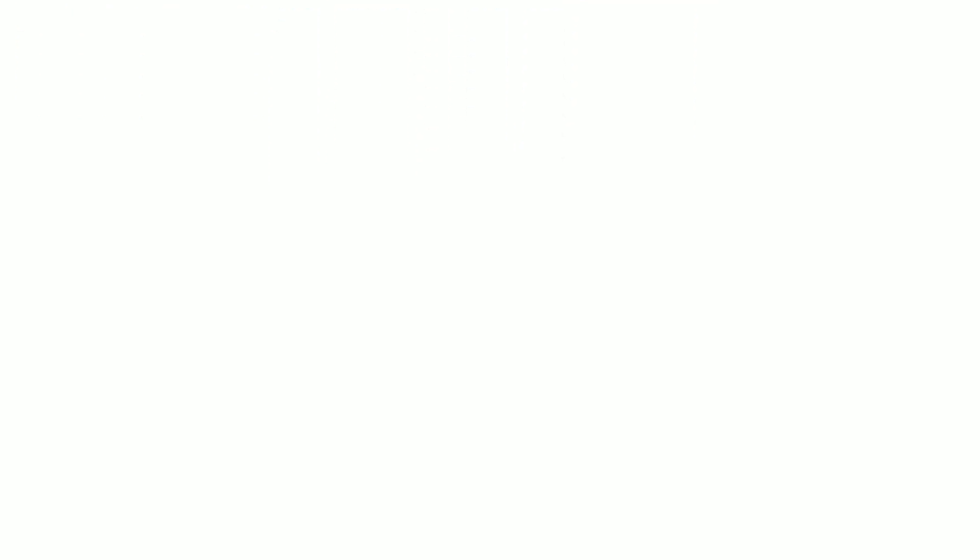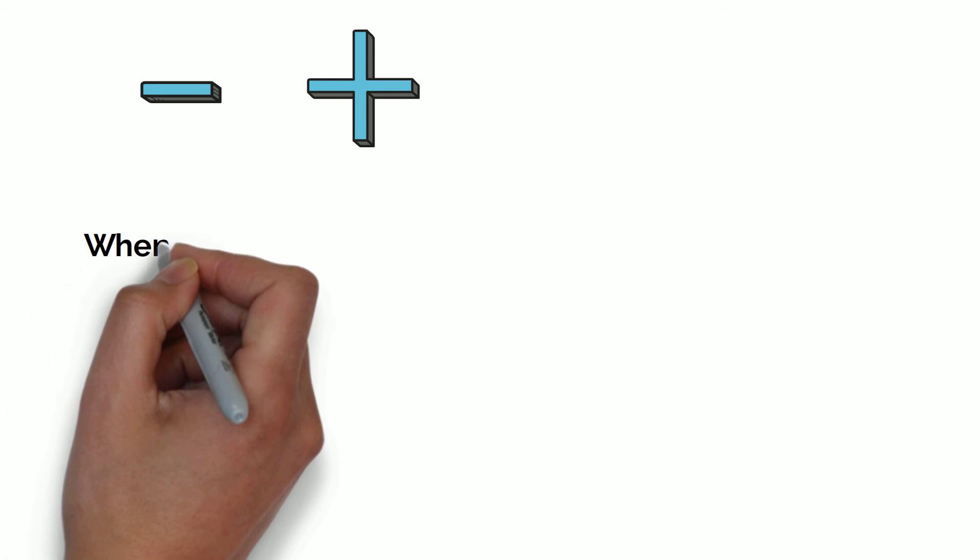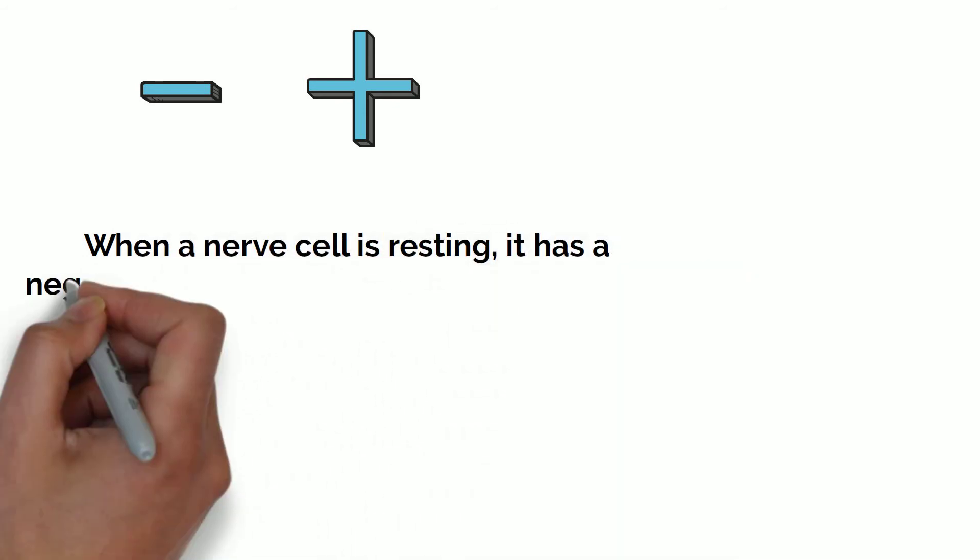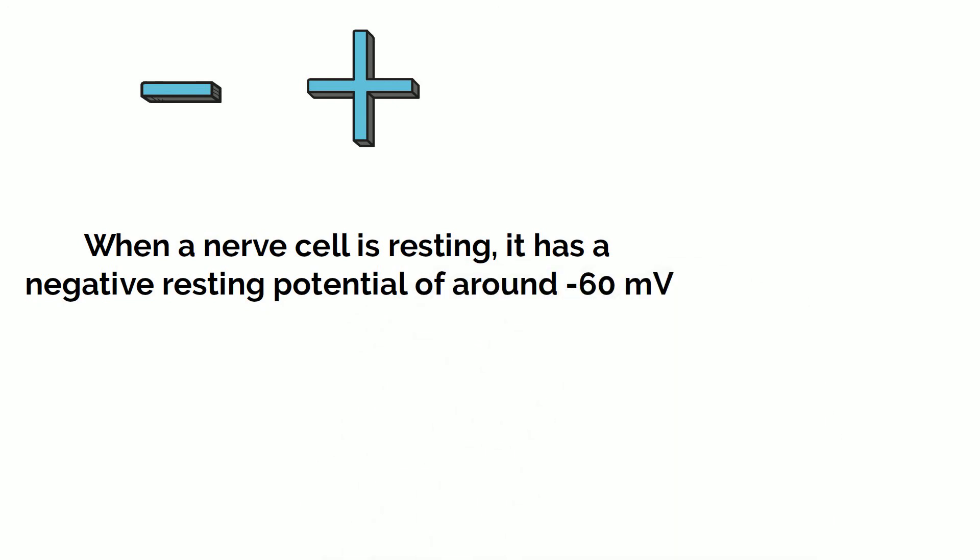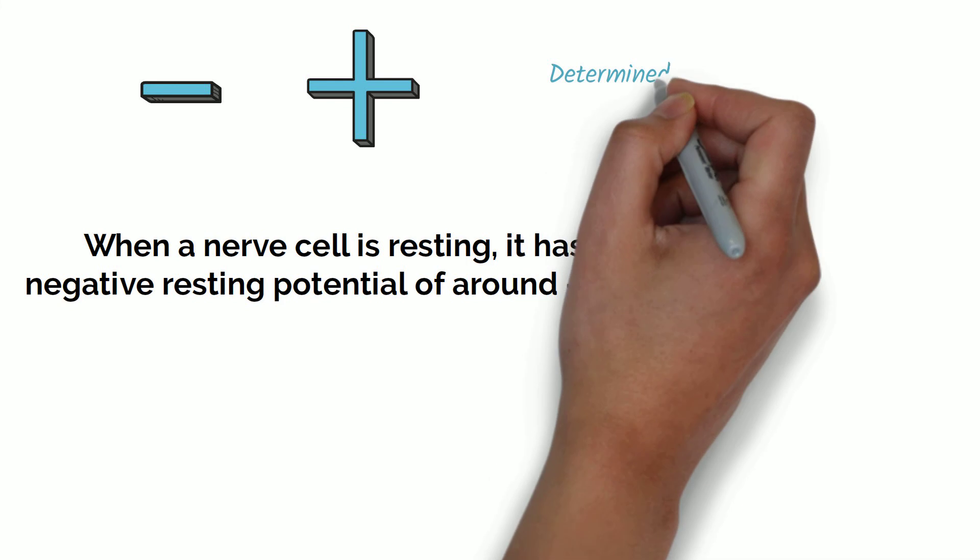Ions either have negative or positive charges, if it is either an anion or a cation. The presence of these ions in the nerve cells has an impact on the electrical potential of the cell itself. When it is resting, so when it is not transmitting an impulse, neurons have a negative resting potential of around minus 60 millivolts.